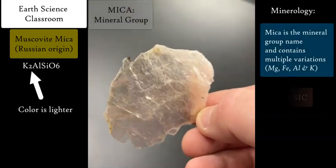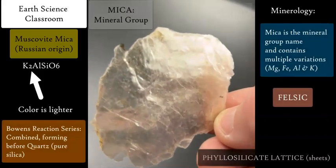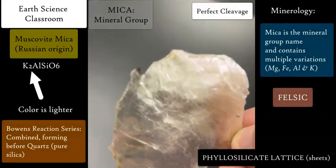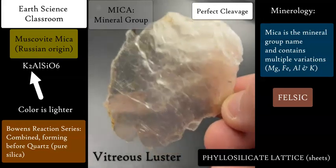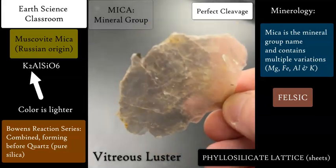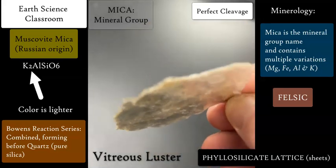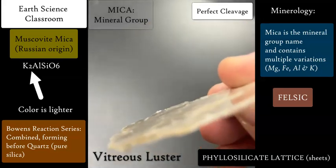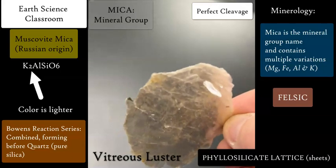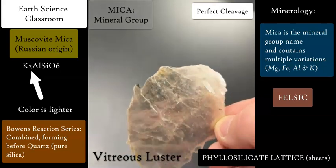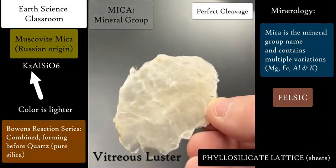Here we have mica, the mineral group that contains many minerals. They're a phyllosilicate mineral, which means they're sheets of silicate tetrahedra, and they create perfect cleavage and natural breaks.